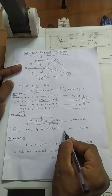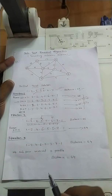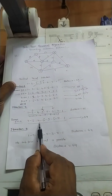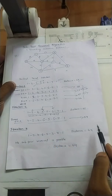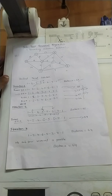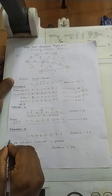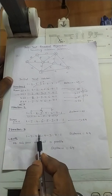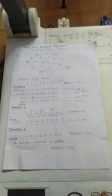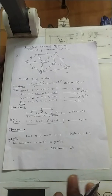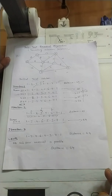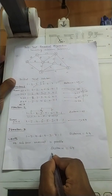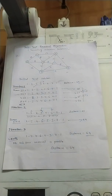This path with distance 64 becomes the trial solution for the next iteration. In the next iteration we should reverse 4 nodes at a time, but reversing any 4 nodes yields no valid existing path. So at this point we stop, and the final answer for the Travelling Salesman Problem using Sub2 Reversal Algorithm is a minimum distance of 64. Thank you.